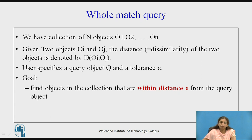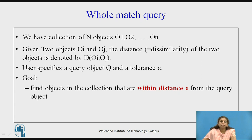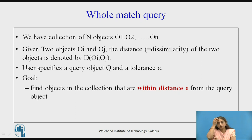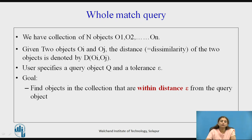Considering the whole match case: we have a collection of N objects, and to find which are similar or dissimilar we define a distance function. The distance or dissimilarity between two objects is denoted D(Oi, Oj). The user specifies the query object and a tolerance epsilon — the goal is to find all objects within distance epsilon from the query object.